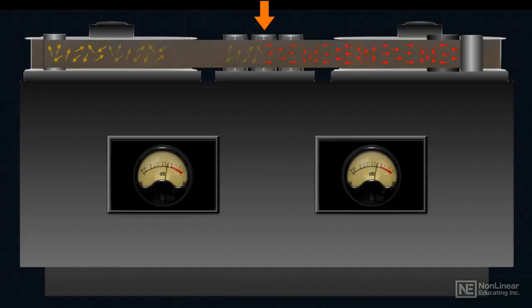This magnetic field realigns the particles on tape to correspond to the positive and negative swings of the audio voltage, the audio waveform, creating a magnetic version of that waveform across the length of the tape.